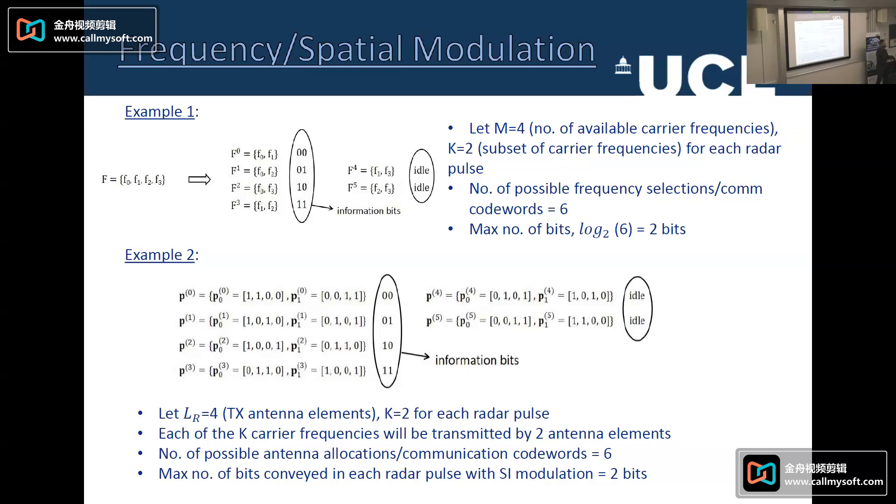And now we're doing both sensing and communications. Some examples of how this would come through. Example one, you have these subsets of different frequencies that you can transmit and your information bits are then encoded in this. If you've got M equals four, number of carrier frequencies, K equals two subset of those, then you're sending two each time of the four combinations. And you end up with just two bits of information you can send. And this is on a per pulse basis. If you advance that now and have four antennas, and in this case, two radar pulses, K equals two for each radar pulse, each of the carrier frequencies will be transmitted by two different antennas.